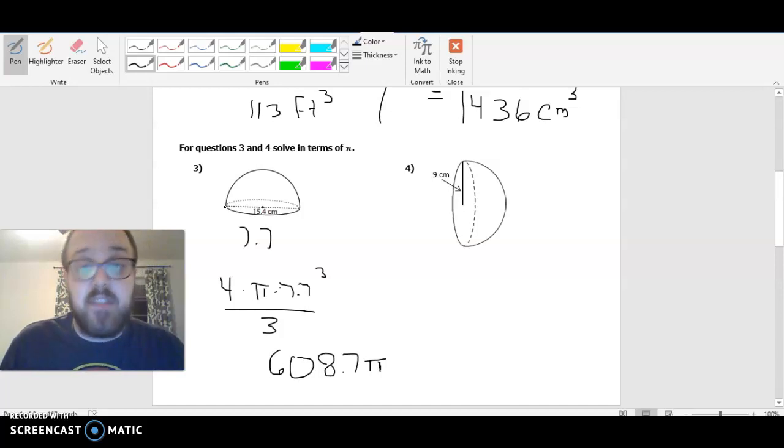So how do I then go ahead and solve this for a hemisphere or half of a sphere? Well, if something's half the size, I divide it by 2 and that'll give me the size. So I'm going to take that 608.7, divide that answer by 2, and I'm going to get that the actual volume when I cut it in half. So remember, I want to divide this by 2.